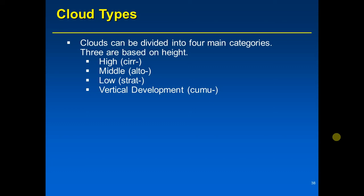We'll talk about specific cloud names and where the height regions are. Clouds that can produce rain have the root 'nim-' — 'nim' is Latin for rain.